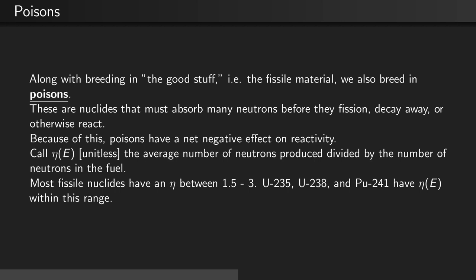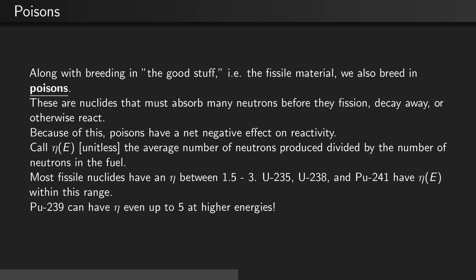Call η(E) the average number of neutrons produced divided by the number of neutrons in the fuel region. Most fissile nuclides have an eta value between 1.5 and 3. Uranium-235, uranium-238, and plutonium-241 all have etas within this range. Plutonium-239 can have an eta of up to 5 at higher energies. This means that for every neutron that's absorbed, 5 neutrons are added to the core.